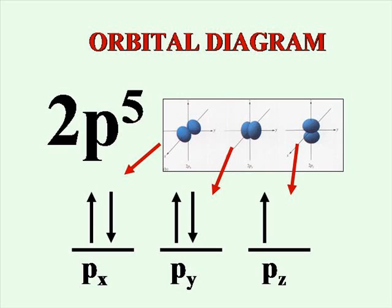Orbital diagrams show us in which orbitals the electrons are actually entering in that sublevel. For example, the Px has 2 electrons, the Py has 2, but the Pz only has 1 electron. We will later use orbital diagrams to tell us where electrons are paired and unpaired for bonding.